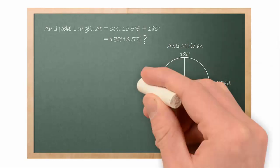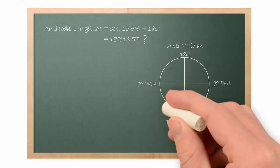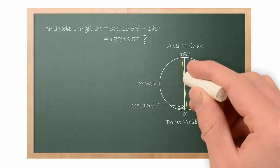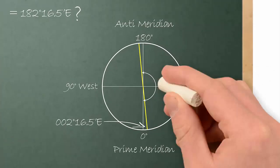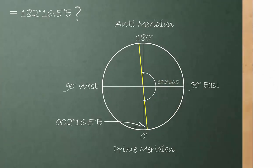90 degree east and 90 degree west. Here is our initial position, 2 degree, 16.5 minute. Extend it to the opposite side. The angle between prime meridian and the antipodal position is 182 degree, 16.5 minute. Our answer is the angle marked in blue.